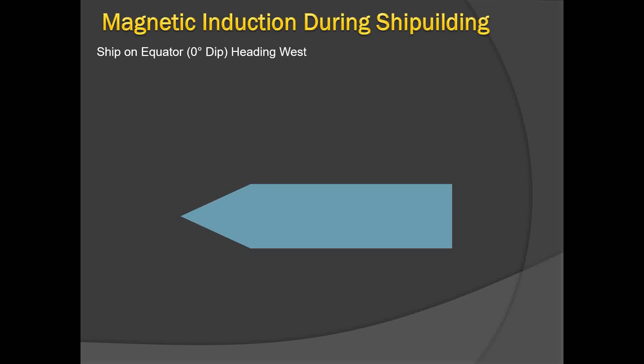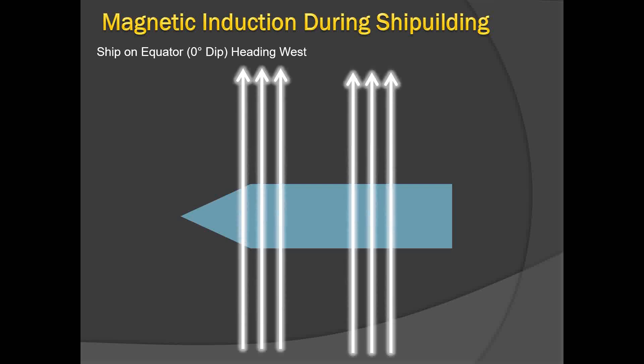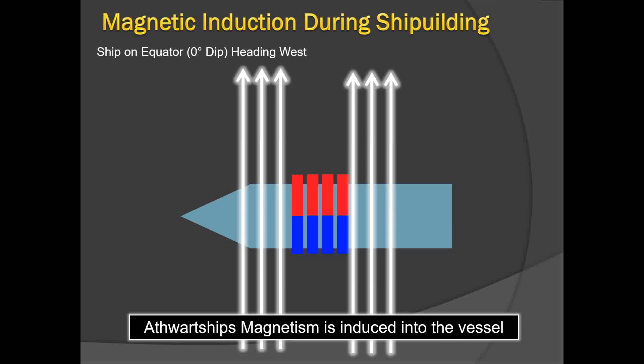Taking another example of a ship on the equator — again dip is 0° — but this time heading west. In this case it acquires thwartship magnetism: the starboard side becomes red because it is attracted towards the magnetic north pole, and the port side becomes blue as the opposite side. So the entire starboard side of the vessel is the red pole and the port side becomes the blue pole.